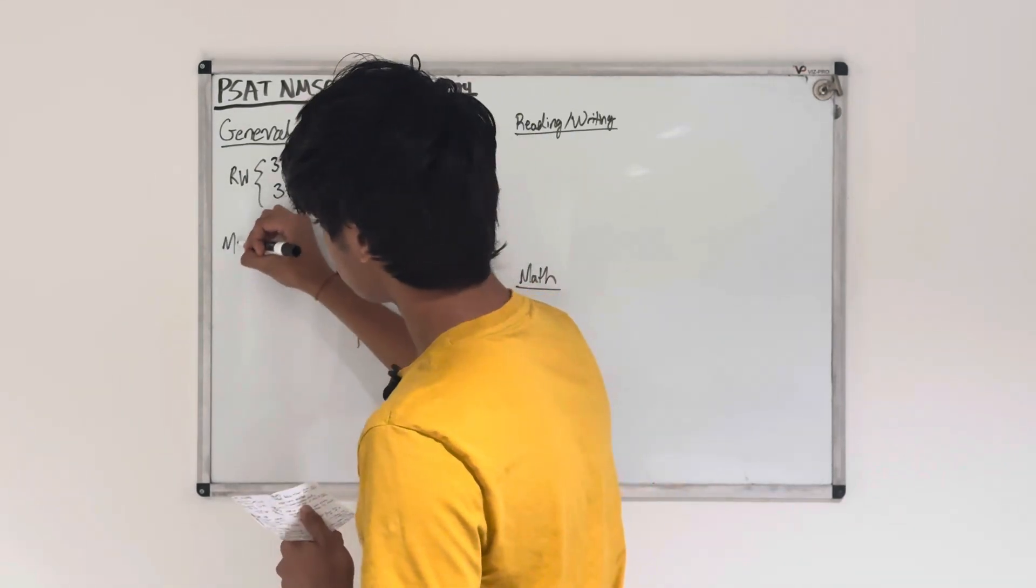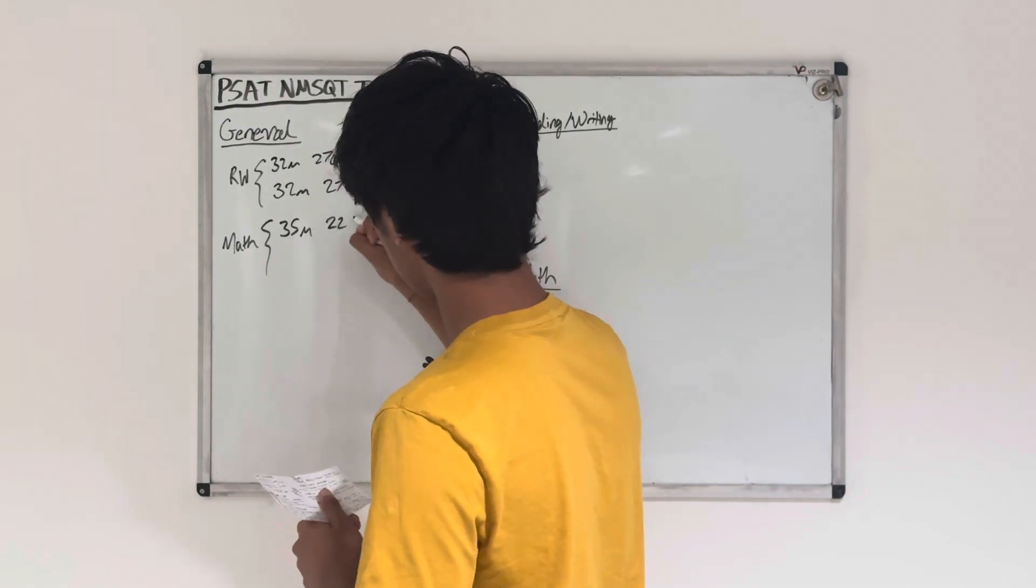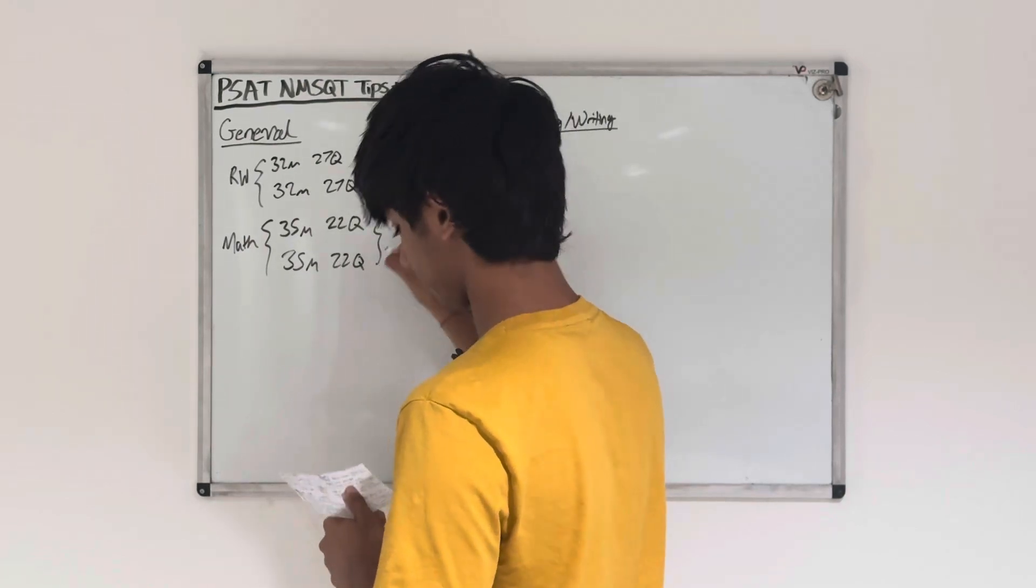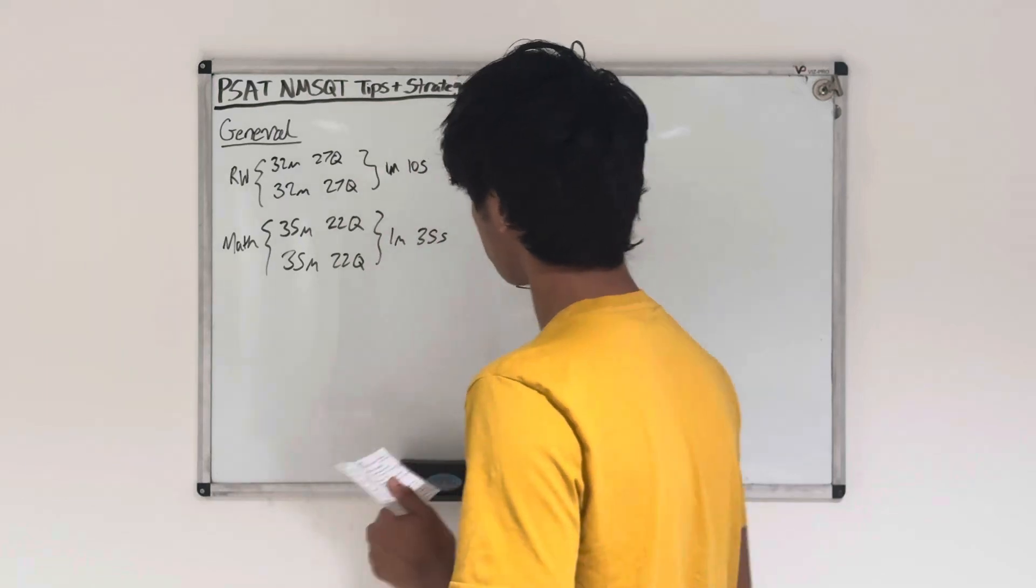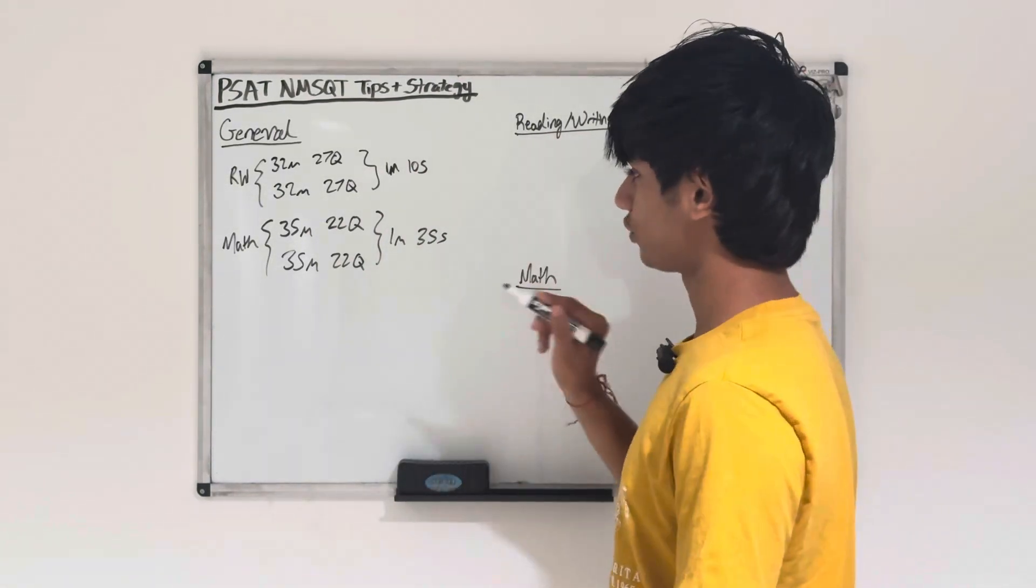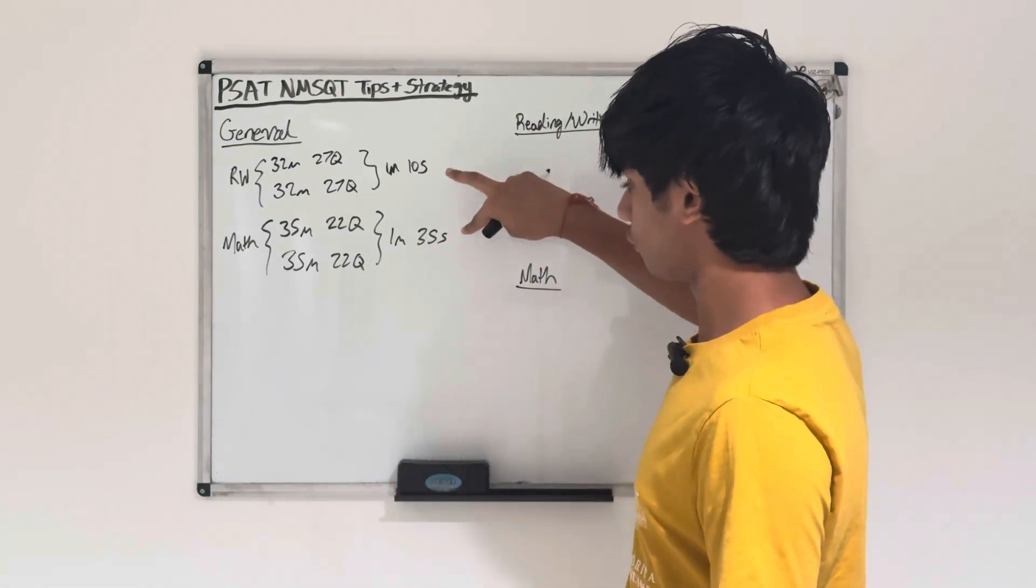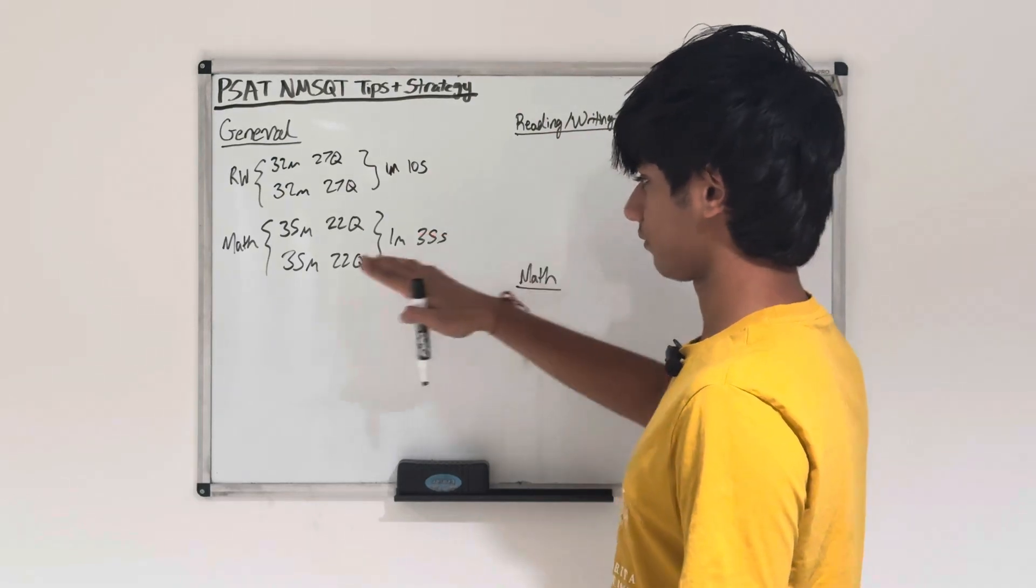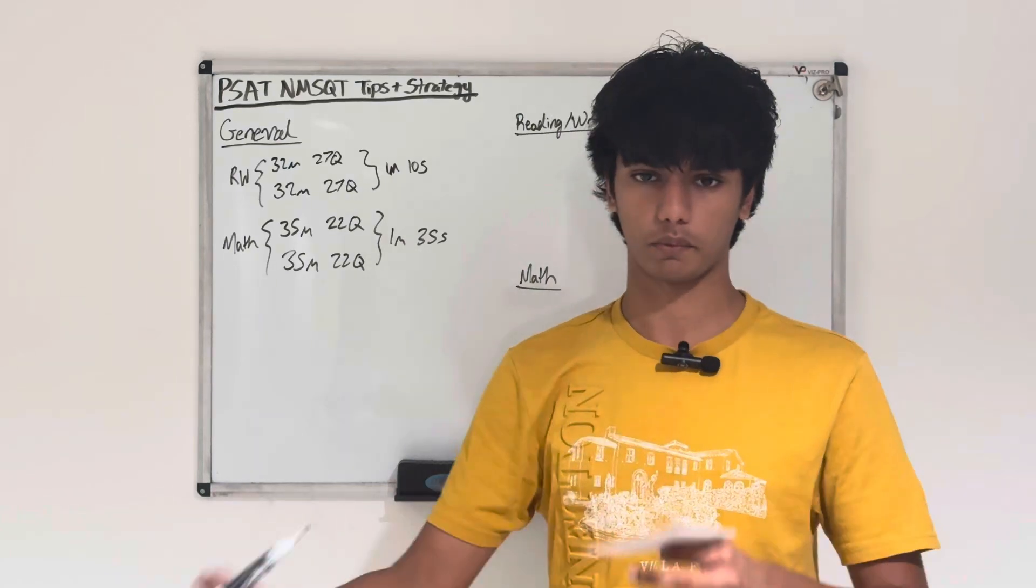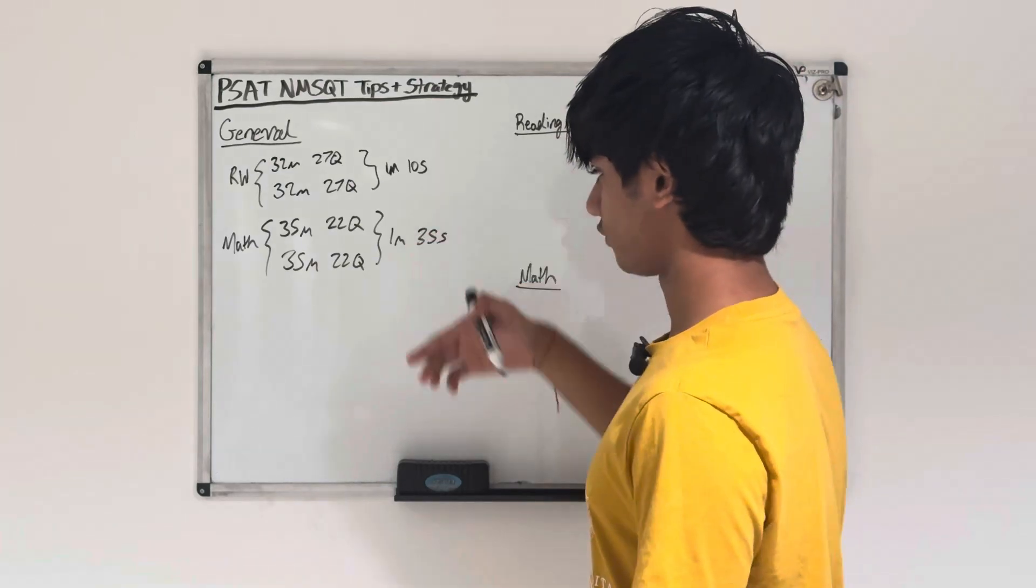On the math section, you have 35 minutes to answer 22 questions and 35 minutes to answer 22 questions in the second module. Do the math, it's about one minute and 35 seconds per question. So what I want to show with these numbers is that the questions are quick. You should not be spending two minutes on a question unless it's a harder question. You should be trying to spend under a minute and 35 seconds on math and a minute and 10 seconds for reading and writing. Obviously, some questions are longer, so you might want to spend more time on those. But the general rule is to be under this time to do well.